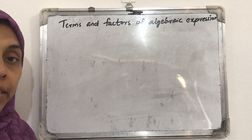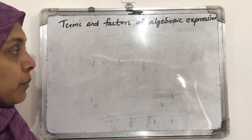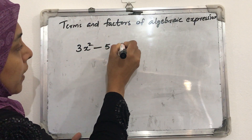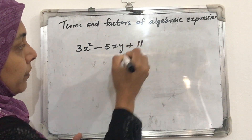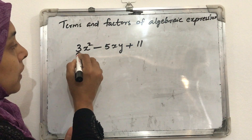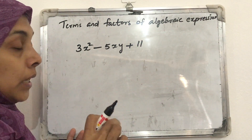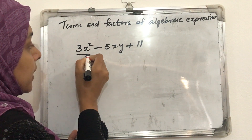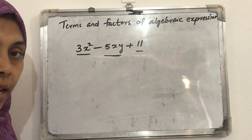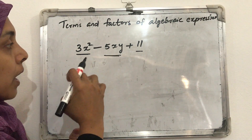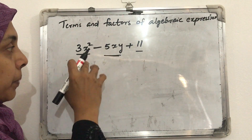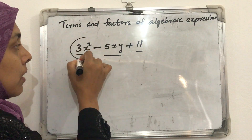Today we can discuss what are the terms and factors of an algebraic expression. Suppose one expression: 3x² minus 5xy plus 11. This is an algebraic expression. When we observe this expression, it has 3 terms. Terms are combined to form an algebraic expression with addition or subtraction signs — so what is separated by addition or subtraction is called a term.